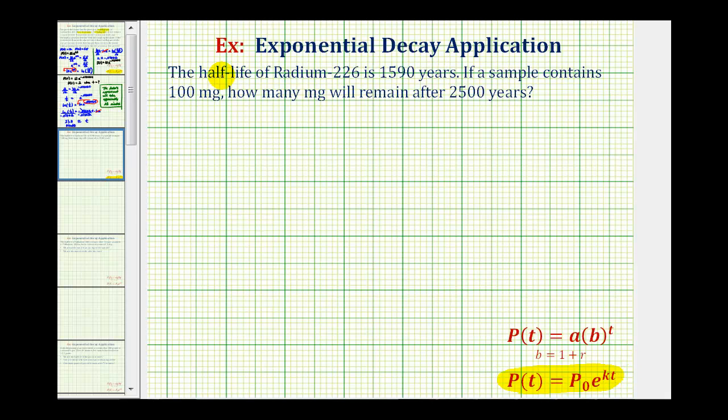So going back up to our question, if the half-life of radium-226 is 1,590 years, that means P(1590) would have to be equal to one-half of the initial amount, or ½ times P₀. And we can use this information to determine the value of k, our continuous decay rate, and then answer the question.